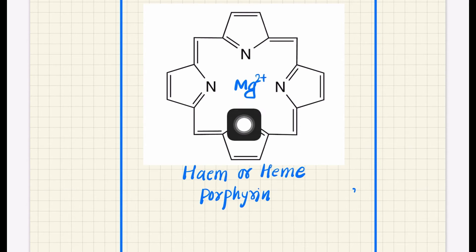This Mg2+ ion is residing at the center of this heme ring, and this heme ring acts as a polydentate ligand because these are the donor sites, and it's just like a coordination compound.